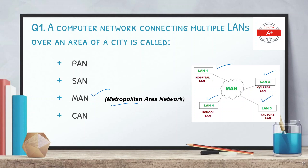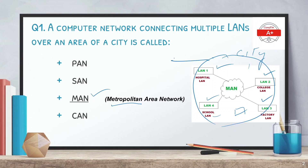These LANs may consist of colleges, hospitals, schools, factories, and many other such places, but the geographical area is limited to a single city. If this network goes beyond the metropolitan or city area — for example, connecting two cities — then we call it a WAN or wide area network.